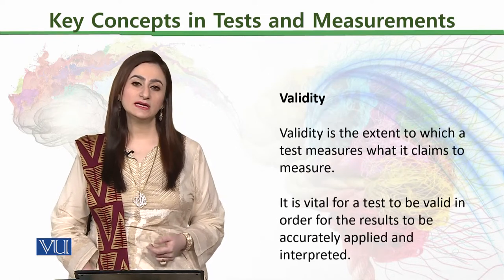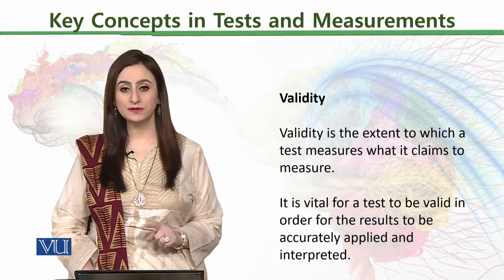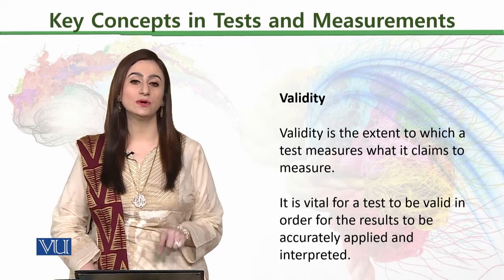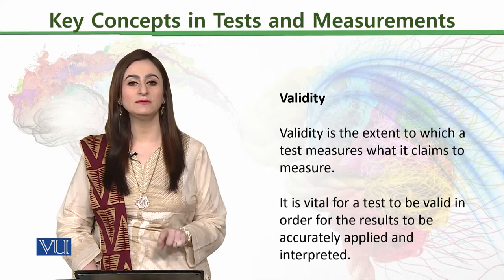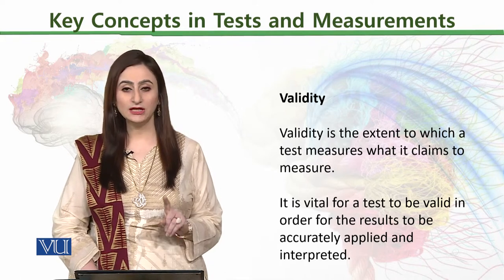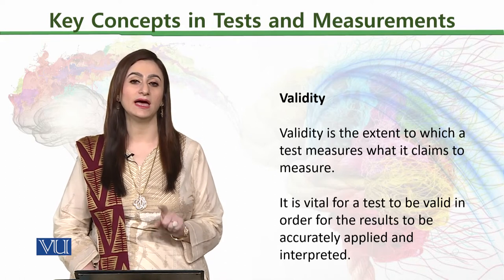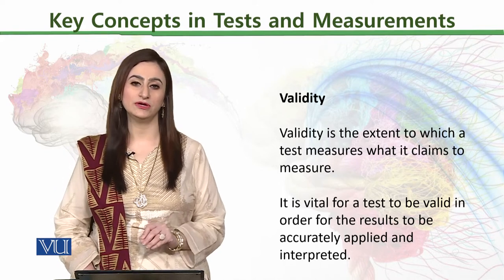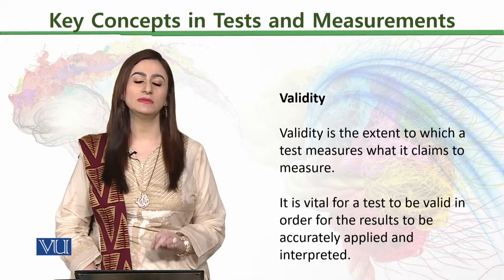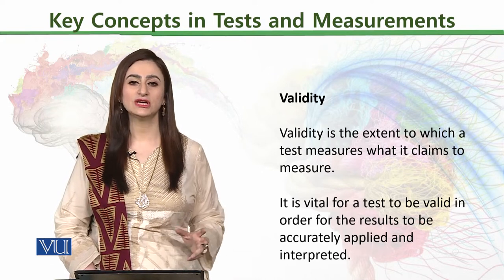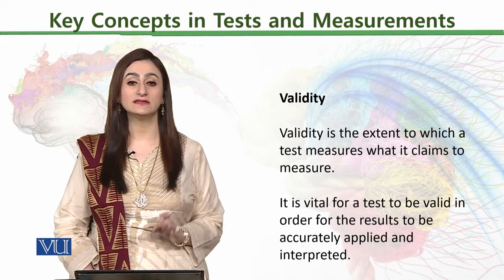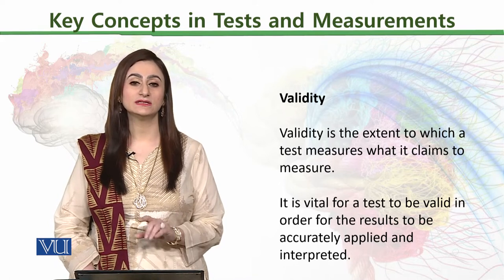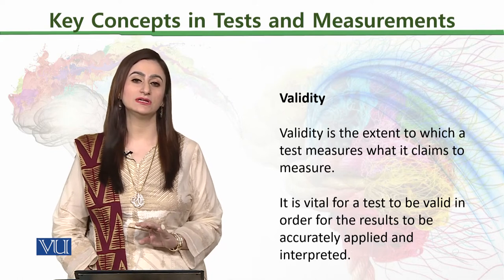Then comes validity. Validity is the extent to which the test measures what it claims to measure. Whatever we are claiming the test is going to measure, it should be exactly measuring that same phenomenon. It is vital for a test to be valid in order for the results to be accurately applied and interpreted. If we say we are measuring shame and guilt in an individual, but the test is actually measuring anxiety or depression, it means this is not a reliable and valid measure — it is not a valid measure of those specific properties. It should measure what it claims to measure.